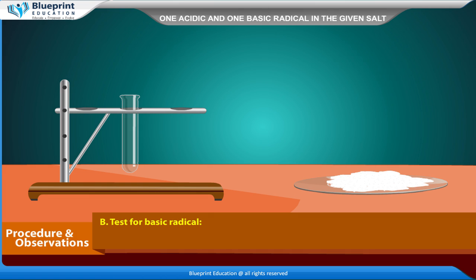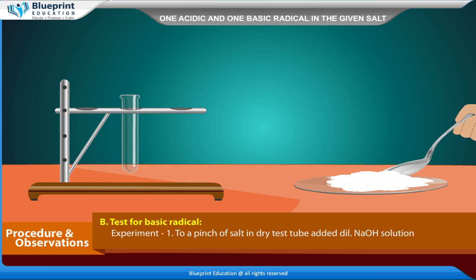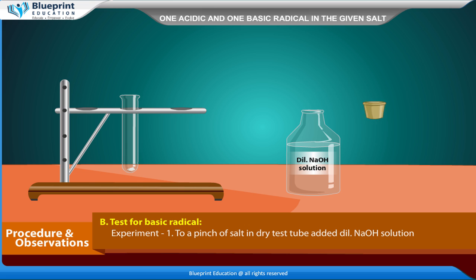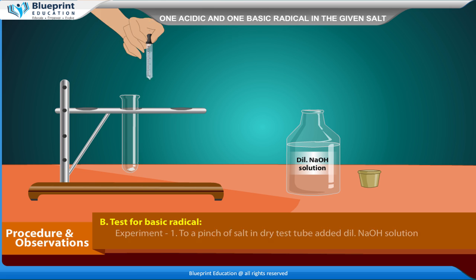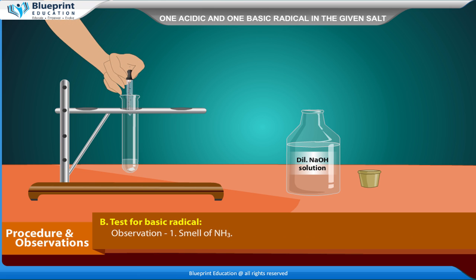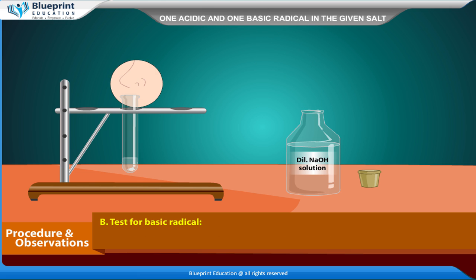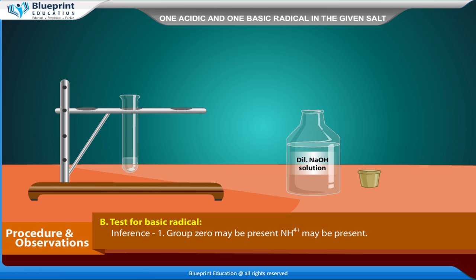Test for basic radical. Experiment: to a pinch of salt in a dry test tube, add dilute NaOH solution. Smell of NH₃ is detected. Inference: NH₃ group 0 may be present, NH₄⁺ may be present.